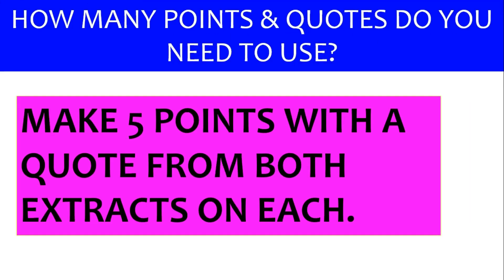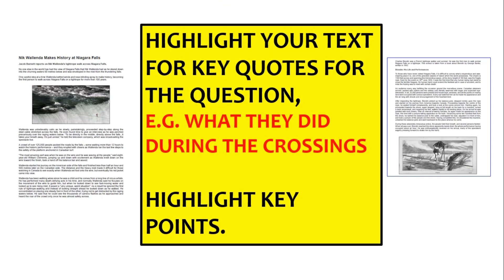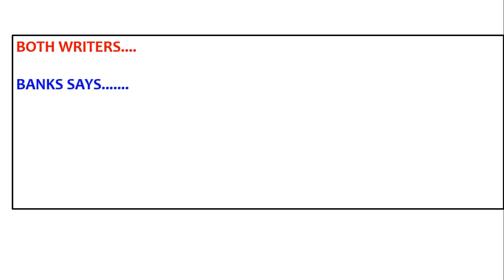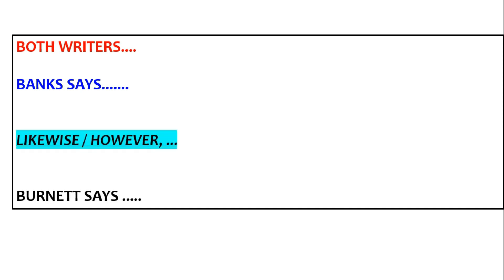How many points do you need? I'd say aim for five or six quotes, as many as you can. Don't stress about hitting exactly five — just use as many quotes as you can in your 13 to 15 minutes. For this question, look at the question and highlight what it's asking for, then highlight five or six short quotes — one or two word phrases — from both texts. Structure your PEEs like this: start with 'both writers,' then give what the first writer says, then use 'likewise' or 'however,' then give what the second writer says.